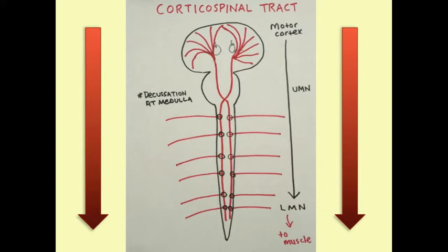The corticospinal tract is exactly what it says: cortical to spine. It sends upper motor neurons through the internal capsule, which are lateral to the thalami. Those project downward through the columns, down through the medulla, and at the lower part of the medulla they decussate. When they decussate, they move more posteriorly and laterally.